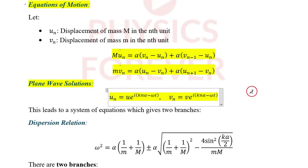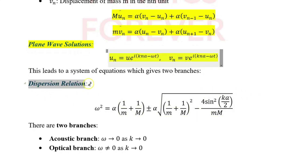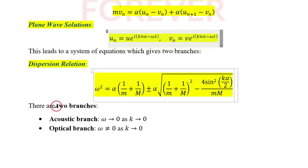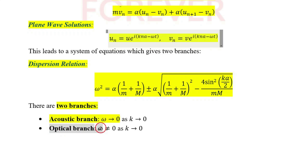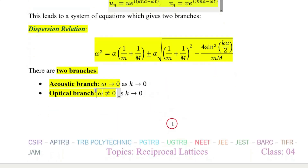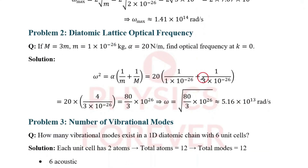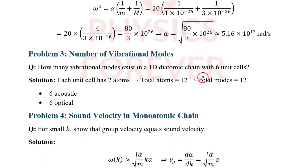For the diatomic lattice, we assume plane wave equations corresponding to displacements u and v. The dispersion relation yields two branches: the acoustic branch and the optical branch. When omega approaches 0, k equals 0 for the acoustic branch; for the optical branch, omega is not equal to 0 when k equals 0. Problems will be discussed separately in a dedicated video.